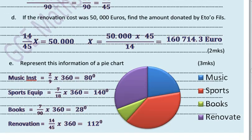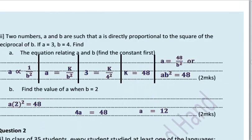All right, that brings us to this B part of question one. Two numbers a and b are such that a is directly proportional to the square of the reciprocal of b. If a is 3 and b is 4, find the equation relating a and b. The first thing to do is to find the constant. So a is directly proportional to 1 over b squared. And we can replace that constant of proportionality by k. And when a equals 3, b equals 4, we obtain the value of k to be 48. So the equation is a equals 48 on b squared or ab² equals 48.